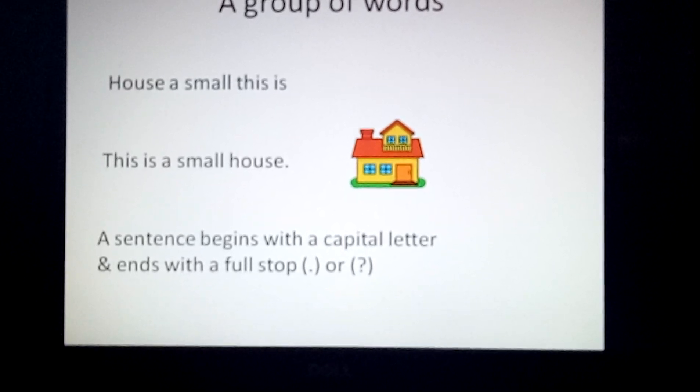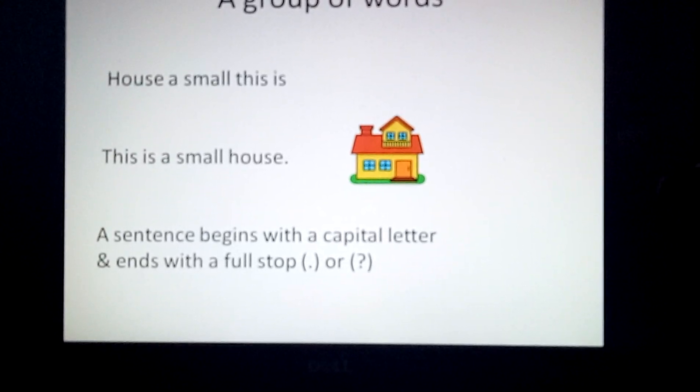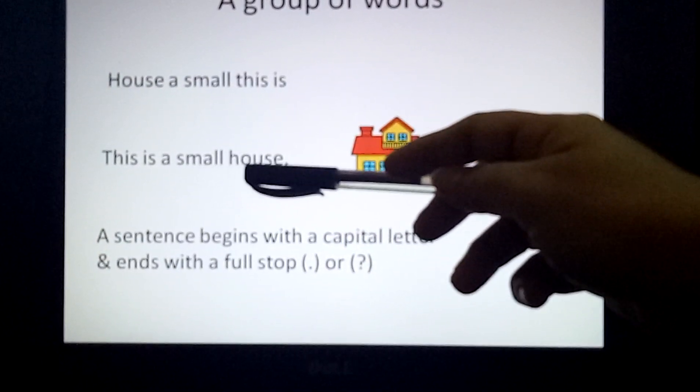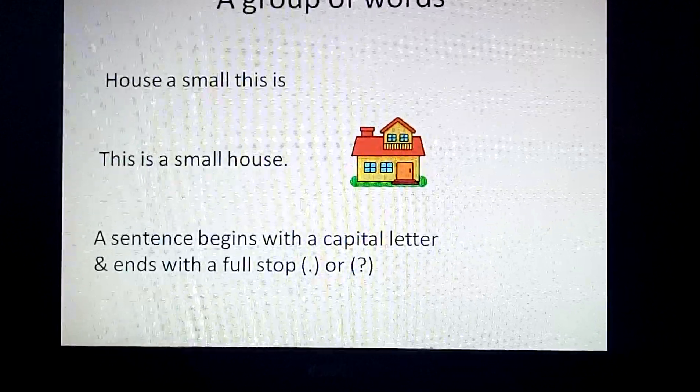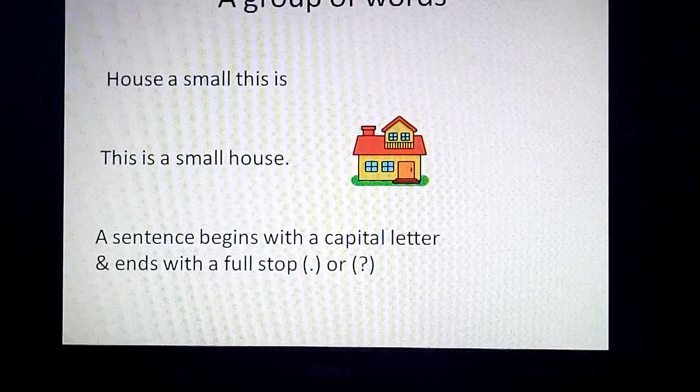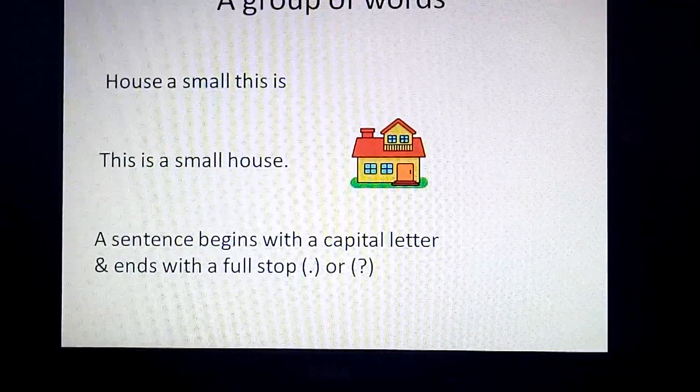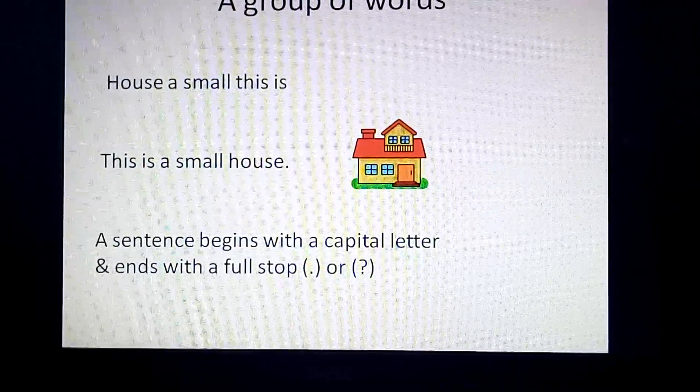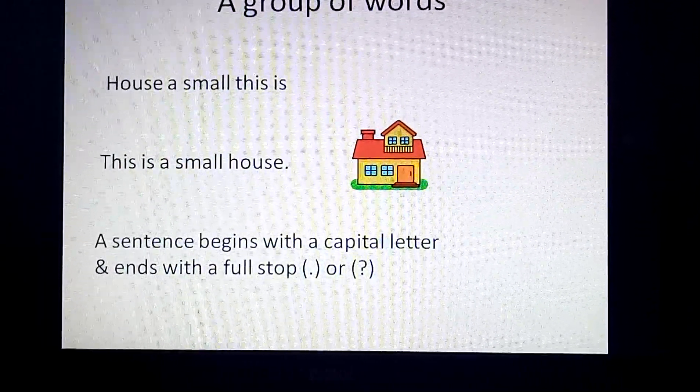But if these words are arranged in such a way so that we can have a meaning like this: This is a small house. Then we understand, yes, this sentence is telling about a small house. So, what is a sentence? It is a group of words, but it must have a meaning.